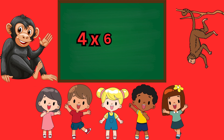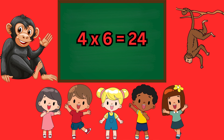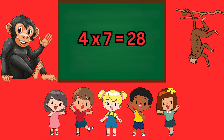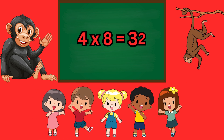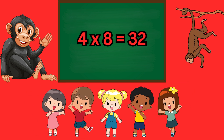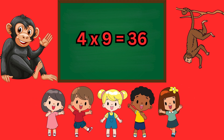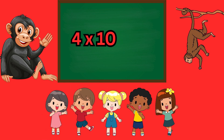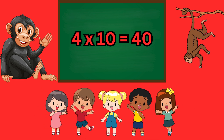4 sixes are 24, 4 sevens are 28, 4 eights are 32, 4 nines are 36, 4 tens are 40.